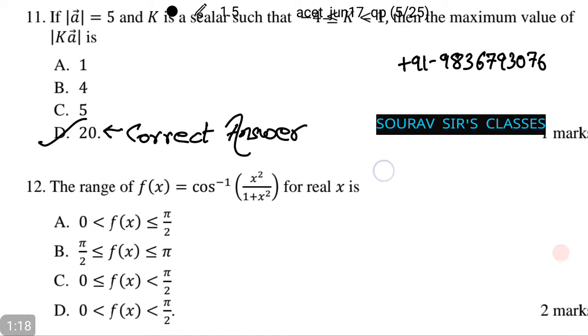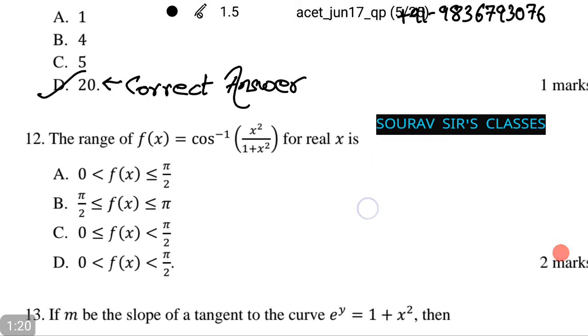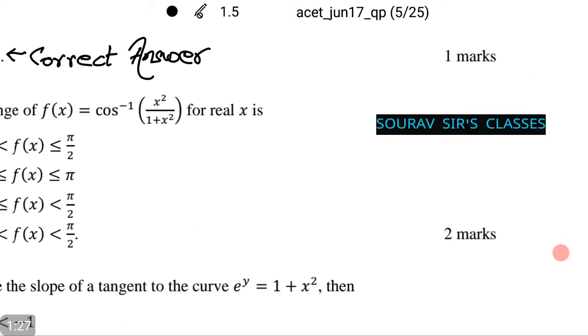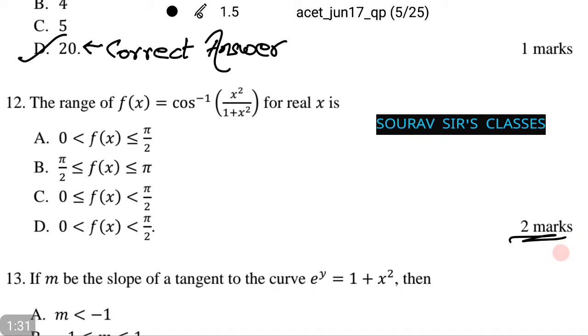Moving on to the next question, the range of f(x) equals cos inverse of x squared divided by 1 plus x squared for real x is among the following options. Notice this is a critical question because it consists of two marks.